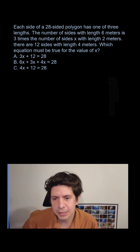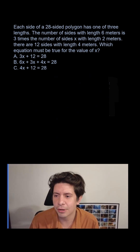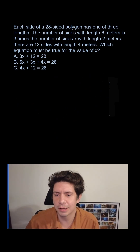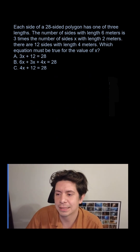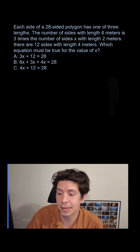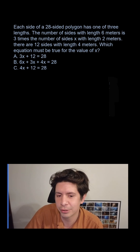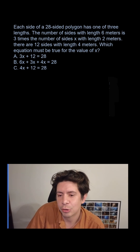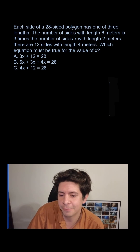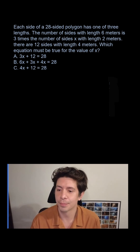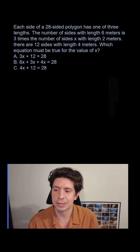Each side of a 28-sided polygon has one of three lengths. The number of sides with length six meters is three times the number of sides x with length two meters. There are 12 sides with length four meters. Which equation must be true for the value of x?